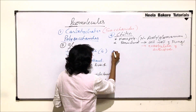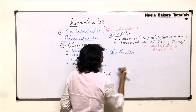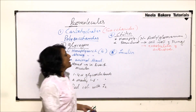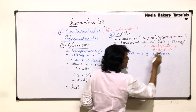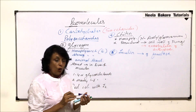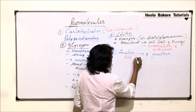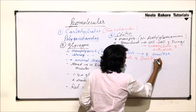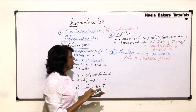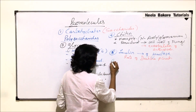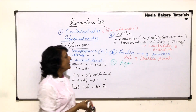The fifth polysaccharide is inulin. It is a polymer of fructose only, which means it is again a homopolysaccharide. It is found in the roots of the dahlia plant.